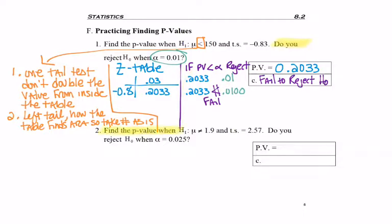For our second example, we have not-equal-to. So we have a two-tailed test, which means we will double our p-value for this problem.